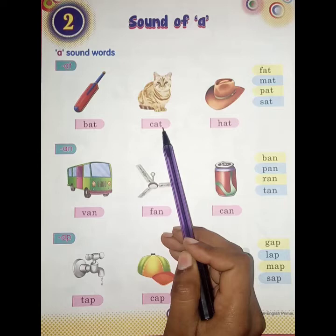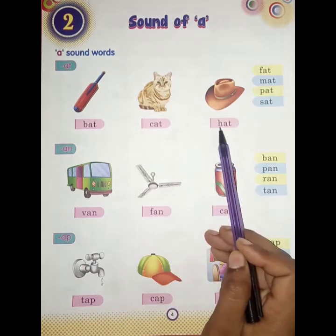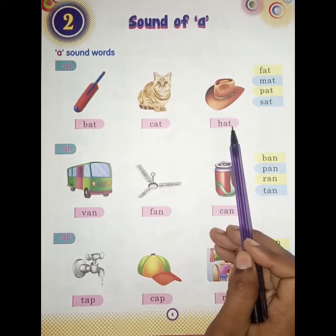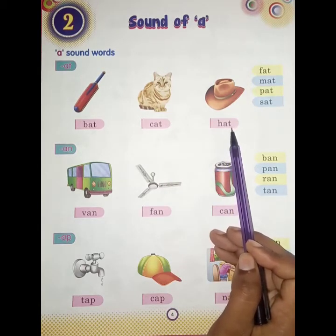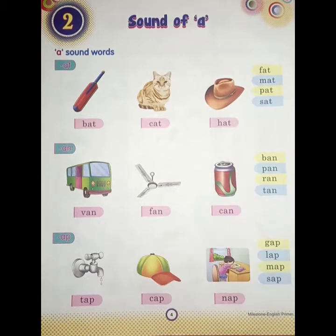C, A, T — cat. H, A, T — hat. So students, words which have A, T at the end have the 'at' sound.